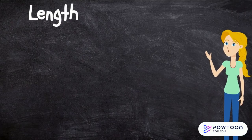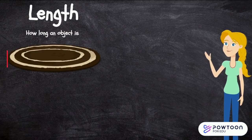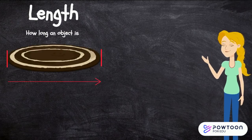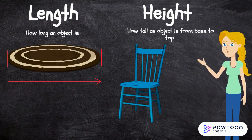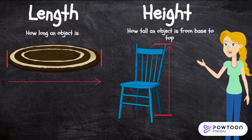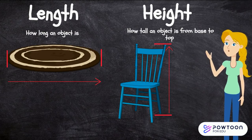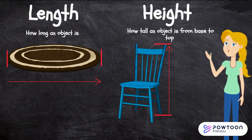When measuring length, you are finding out how long an object is. When measuring height, you are finding out how tall an object is from the base to the top.